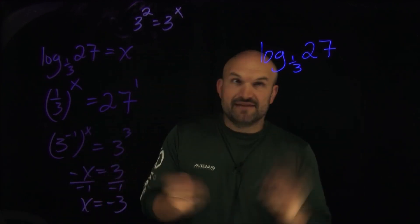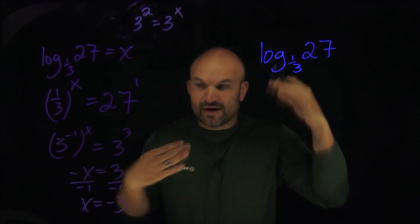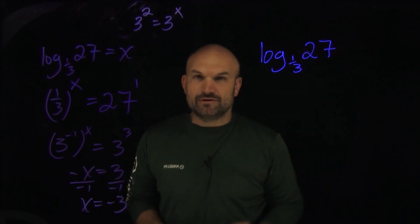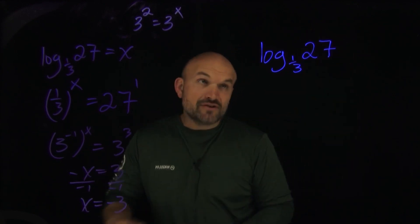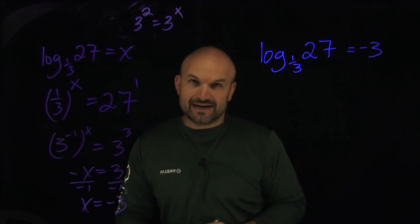So therefore you can see in this case, if I was going to take one-third raised to the negative third power, that's going to equal 27. So therefore in this logarithm, we can say this is going to equal negative three.